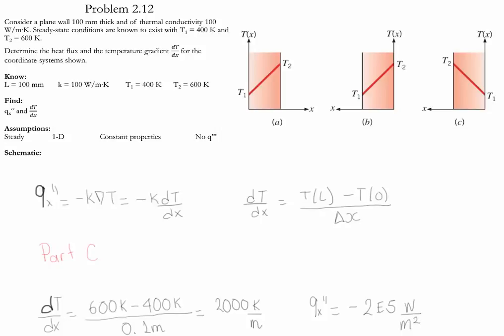Notice that the values of the fluxes for the three cases are exactly the same. What changes depending on the location of the temperature is whether it's positive or negative.